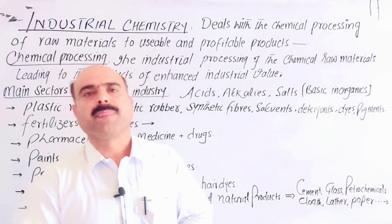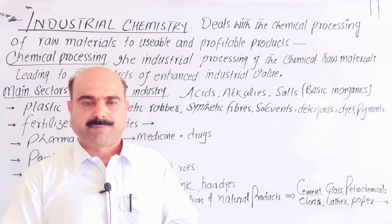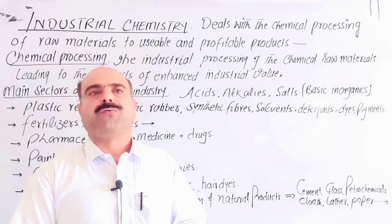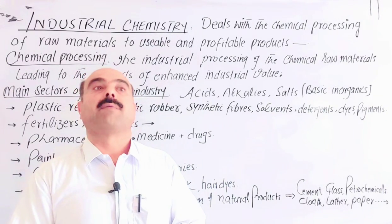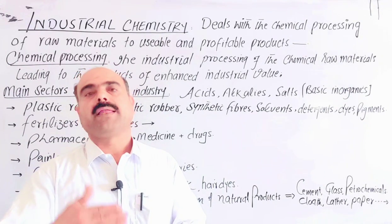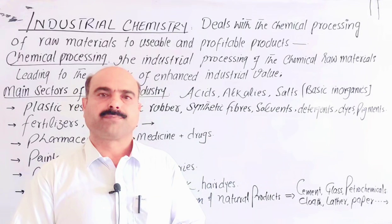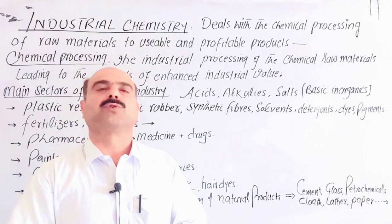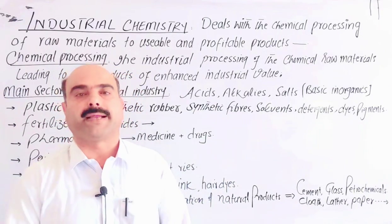Dear students, during industrial processing, chemical reactions occur between organic, inorganic, or both. Organic materials combine together and form new products of the desired value. Similarly, inorganic materials can also combine to form new products. Organic and inorganic materials can combine to form the desired products.